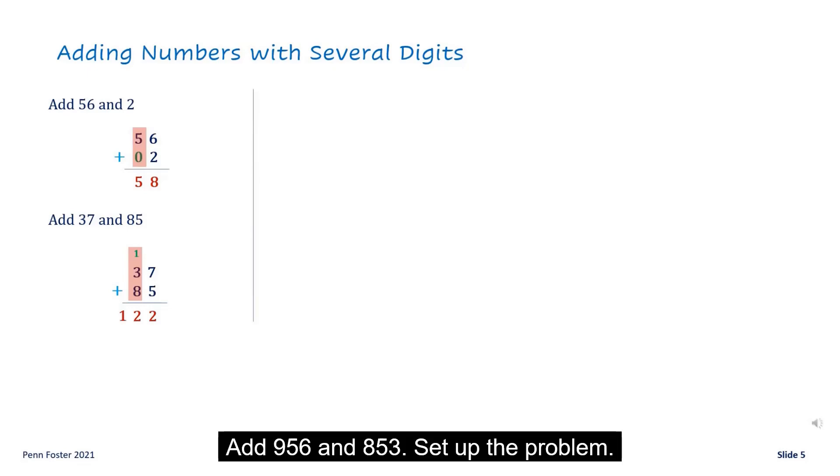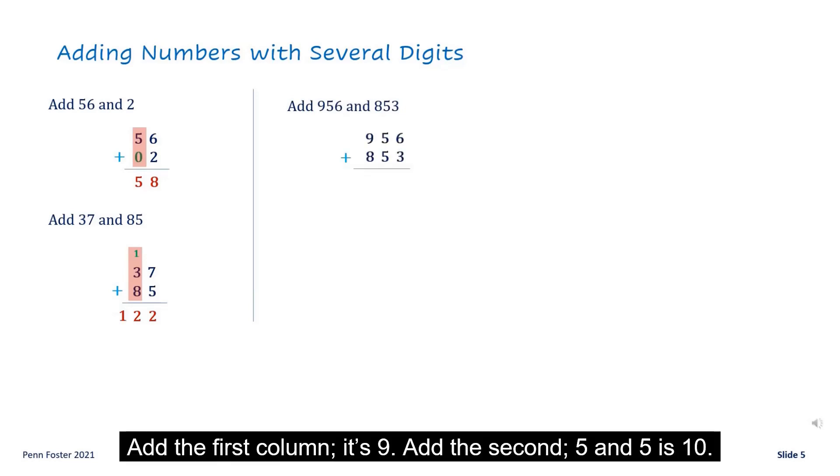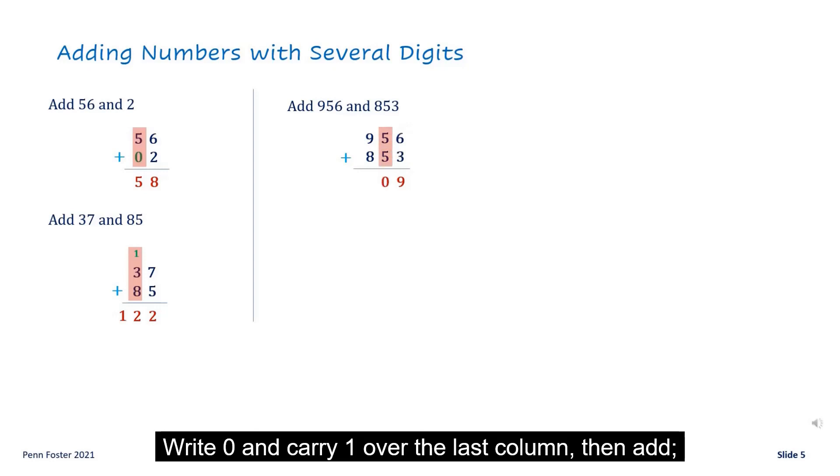Add 956 and 853. Setup the problem. Add the first column. It's nine. Add the second. Five and five is ten. Write zero and carry one over the last column. Then add one plus nine plus eight is eighteen. The sum is one thousand eight hundred and nine.